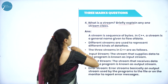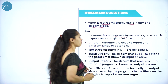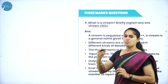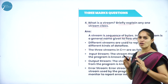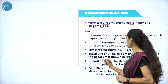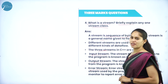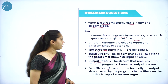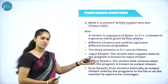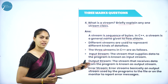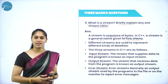The next question: what is a stream? Briefly explain any one stream class. A stream is a sequence of bytes — a collection of bytes representing the movement of data from one end to another, i.e., a flow of data. C++ has three types of streams: input stream, output stream, and error stream. You can write the definition along with a diagram and explain one stream class such as ofstream or ifstream, listing its member functions.